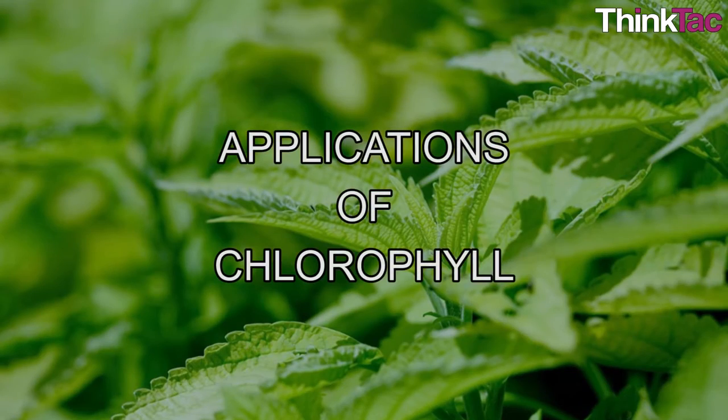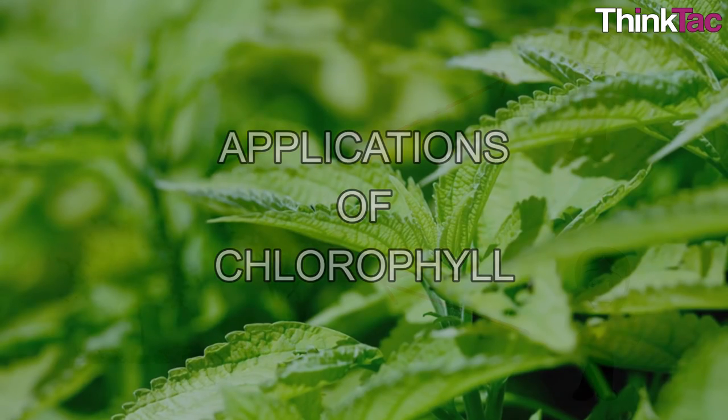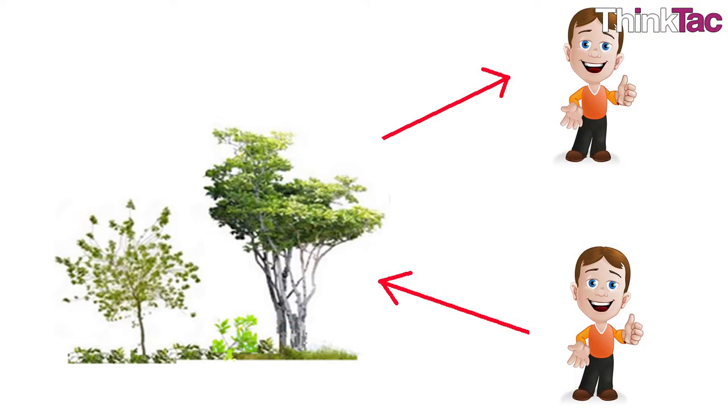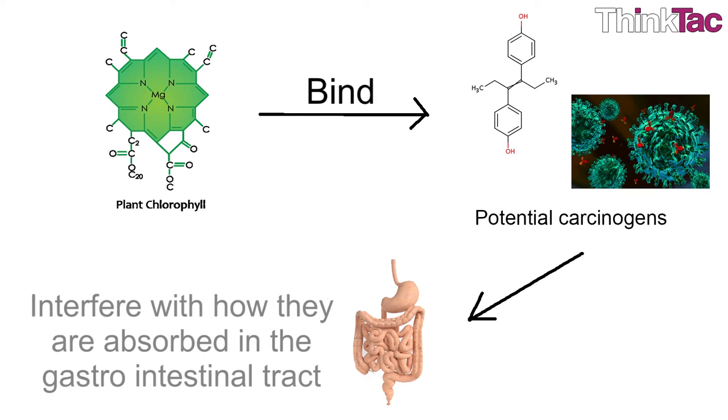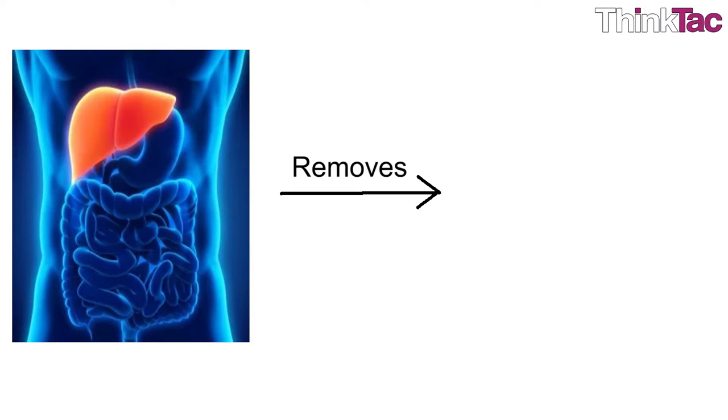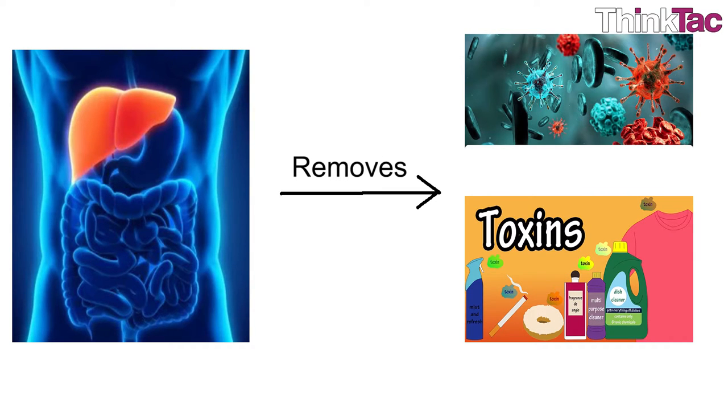Apart from the obvious requirement and benefits of chlorophyll in ensuring life on earth, it also has a few other applications. Some of them are, it helps fight cancer, it can bind to potential carcinogens and interfere with how they are absorbed in the gastrointestinal tract, helps in liver detoxification, it promotes liver health and helps in the elimination of potentially harmful toxins from the body.